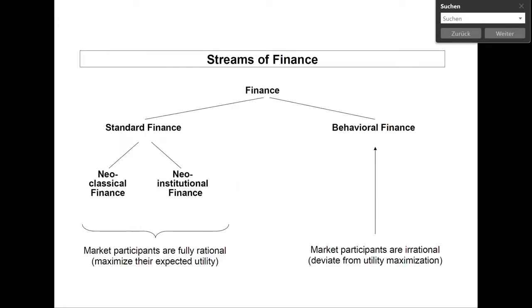First of all, defining finance with a very wide horizon, we have to distinguish between standard finance and behavioral finance. I will come to the differences between these two streams later. Standard finance can be further subdivided into neoclassical finance and neoinstitutional finance. The oldest stream of finance is definitely neoclassical finance.